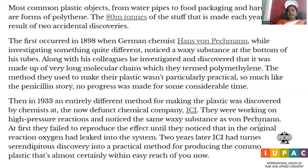At first, they failed to reproduce it until they noticed that oxygen had leaked into the original reaction. Two years later, ICI turned this serendipitous discovery into a practical method to produce common plastic. After so many trials of investigation, polythene was finally generated at industrial scale — and that is how polythene was introduced into humankind. It is a part of life now.